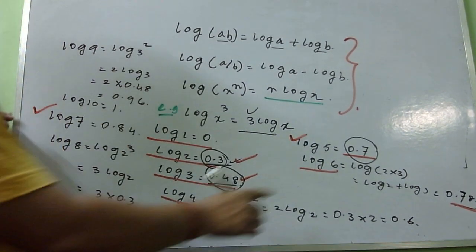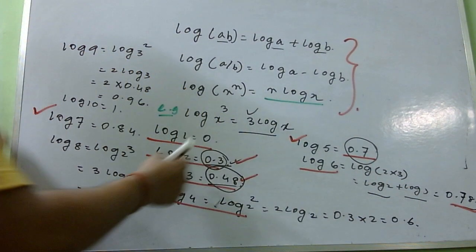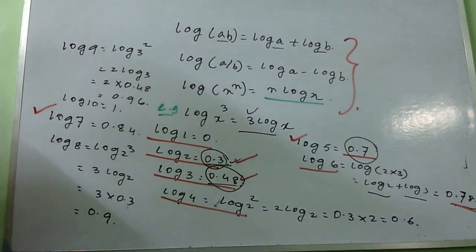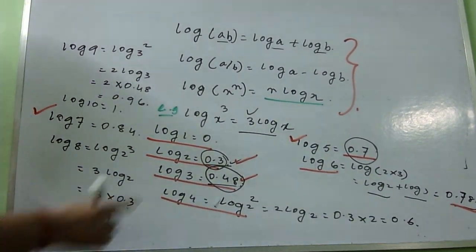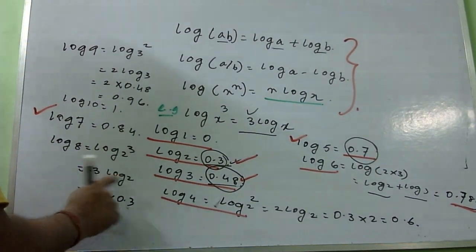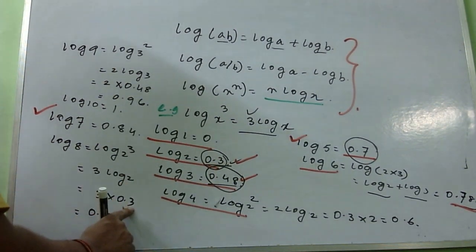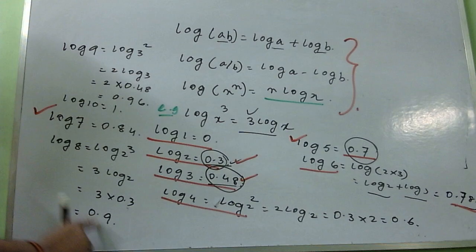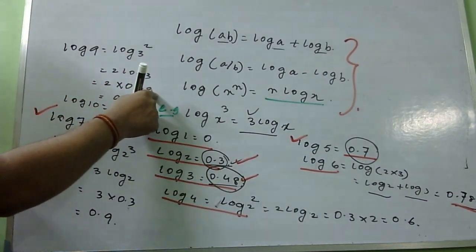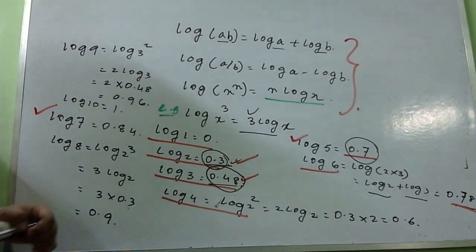Log 6 means log 2 plus log 3, so 0.3 plus 0.48 equals 0.78. Log 7 equals 0.84. Log 8 is 2 cubed, so three log 2 — three into 0.3 equals 0.9. Log 9 is 3 squared, so two log 3 — two into 0.48 equals 0.96. Log 10 equals 1.